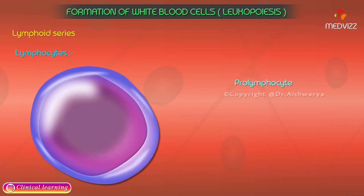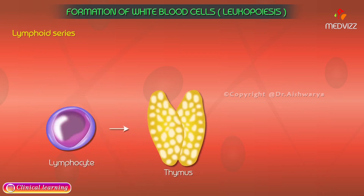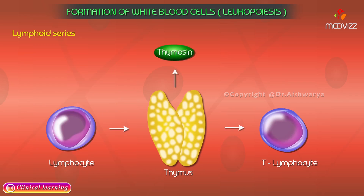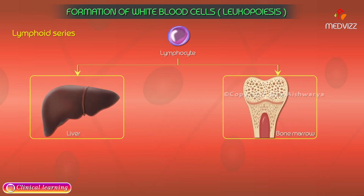Prolymphocytes mature successively into large lymphocytes and small lymphocytes, both of which are found in circulation. Some lymphocytes enter the thymus, where they are processed and come out as T lymphocytes; a factor called thymosin plays an important role in this processing. Some lymphocytes are processed in the liver and bone marrow and come out as B lymphocytes.